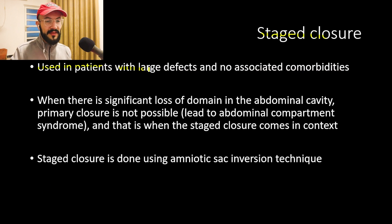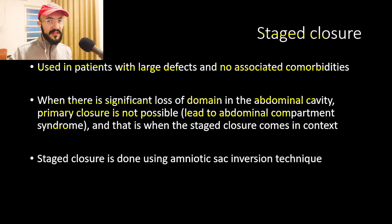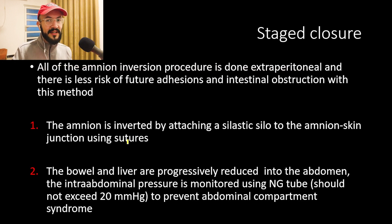Staged closure is used in patients with large defects and no associated comorbidities, where significant loss in the abdominal domain makes primary closure impossible — forcing visceral organs into a small abdominal cavity would increase pressure and cause abdominal compartment syndrome. Staged closure is performed using the amniotic sac inversion technique.